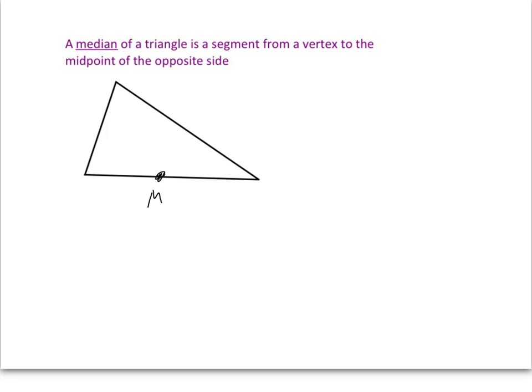If I drew the segment from that midpoint to the opposite vertex, that would be called a median of the triangle. And of course I could do this for any of the three sides, so you could actually have three different medians. I could find the midpoint of that side as well and connect it to the opposite vertex, and we're actually going to explore that a little bit later. But that is a median of a triangle.